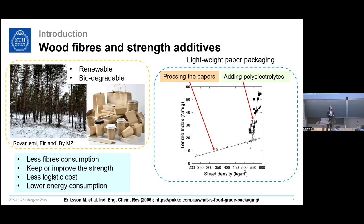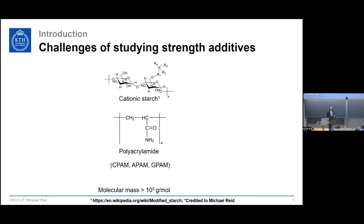Currently, there are many kinds of dry strength additives on the market. In this work we focus on cationic starch, from both potato and corn, and also polyacrylamide-based strength additives. The monomer acrylamide has no charge, but it can co-polymerize with other monomers to become cationic PAM, anionic PAM, or glyoxylated PAM. G-PAM is cationic — it was initially designed as a temporary wet strength additive, but scientists later found it can also be used as a dry strength additive.